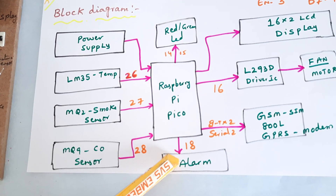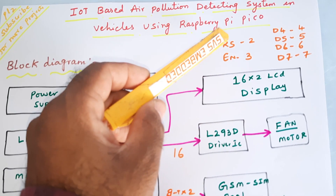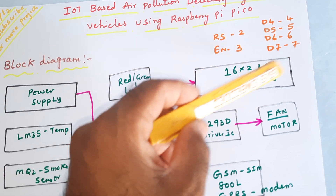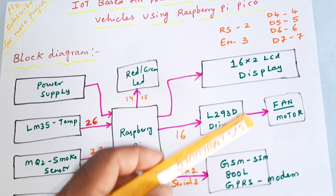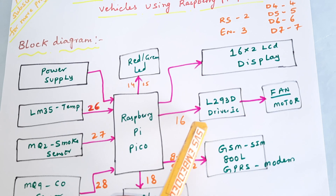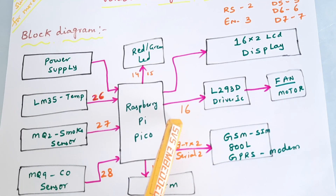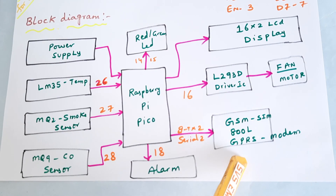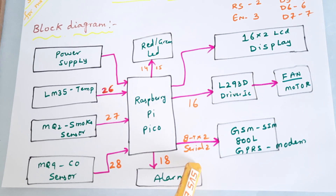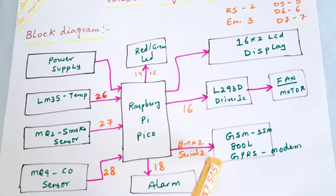The alarm is connected to pin 18. The 16x2 LCD display is connected to RS, Enable, D4, D5, D6, D7 on GPIO pins 2, 3, 4, 5, 6, and 7, plus a PWM pin. The L293D driver IC controls the fan motor on pin 16. The GSM SIM800L is connected to Serial2 RX and TX, connected to pin 8.